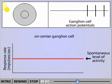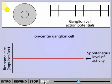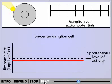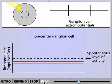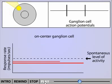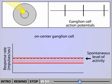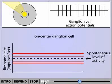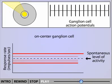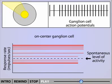Notice that when the light enters the surround region of this on-center ganglion cell, the level of activity recorded in the cell decreases. Conversely, a spot of light in the center of the receptive field increases the firing rate. A maximal response in an on-center ganglion cell is achieved when the entire center of the receptive field is illuminated.